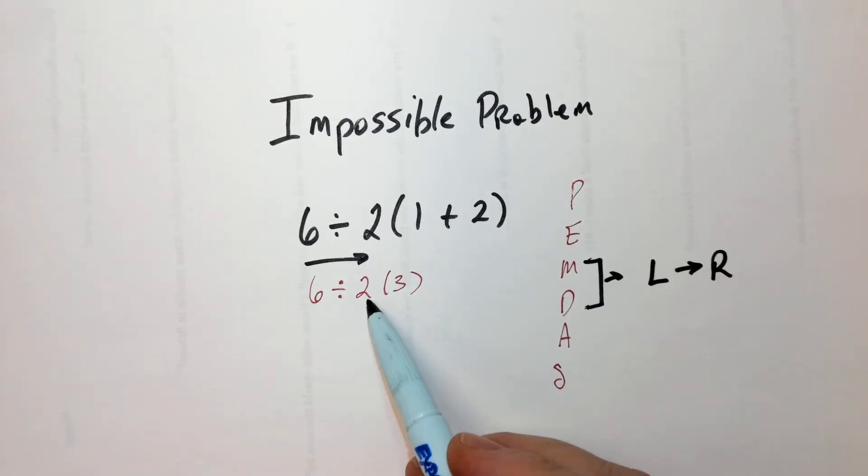So you have 6 divided by 2, which is 3, times 3 is 9.